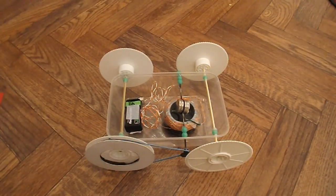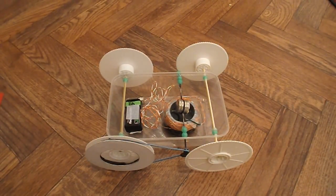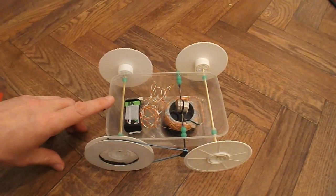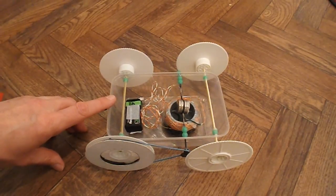Okay, summary time. What have we got? We've got a plastic storage container. That's the chassis of my car.